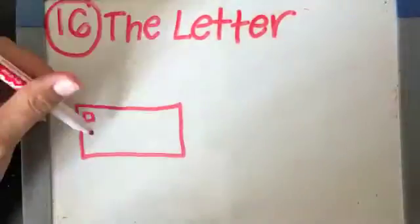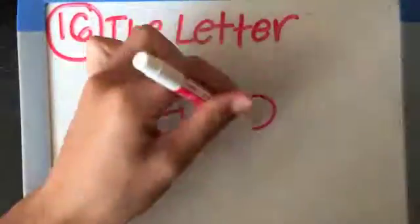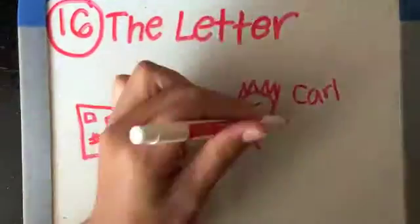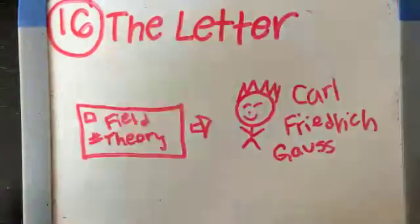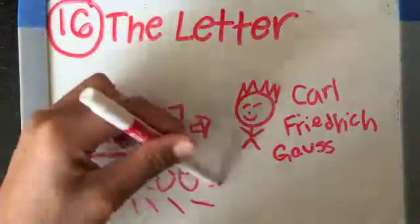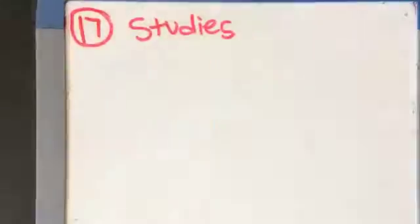Sophie Germain also wrote a letter to Carl Frederick Gauss. In this letter, she stated that number theory was her preferred field. She outlined a strategy for a general proof of Fermat's last theorem. This letter contained the first substantial progress toward a proof in 200 years. However, Gauss never answered this letter.